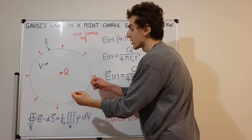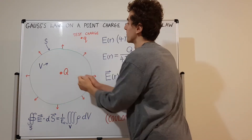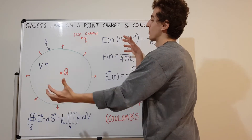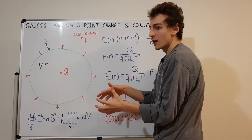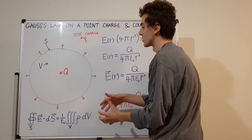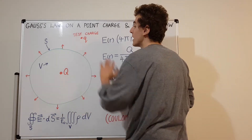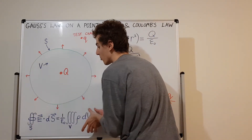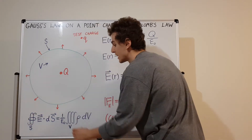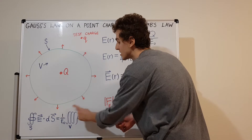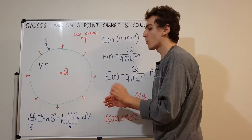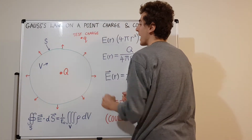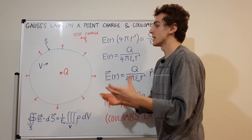Since the charge is positive, electric field lines are going to emanate from that point and pass through every possible spherical surface we can draw around it. We want to draw a spherical surface because this problem has spherical symmetry. Down here I've written Gauss's law in integral form: the surface integral of the electric field equals one over epsilon naught times the volume integral of the charge density. We're going to apply this to the point charge and derive expressions about the electric field.